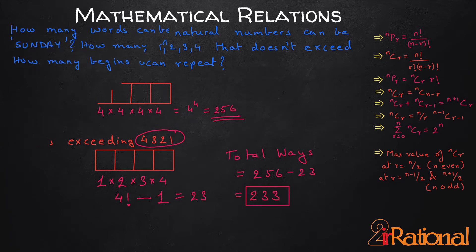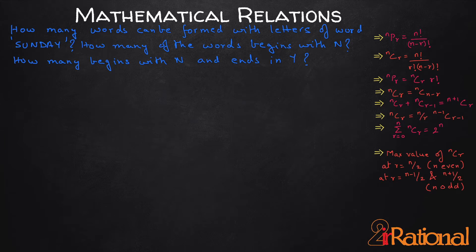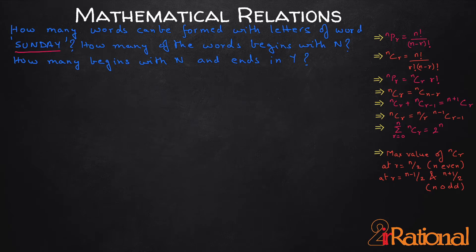Let's see our second question. How many words can be formed with the letters of the word SUNDAY? How many of the words begin with N? How many begin with N and end in Y? We will solve these one by one. First, how many words can be formed with the letters of SUNDAY? We have 6 letters, so the number of ways is 6 factorial, which is 720.